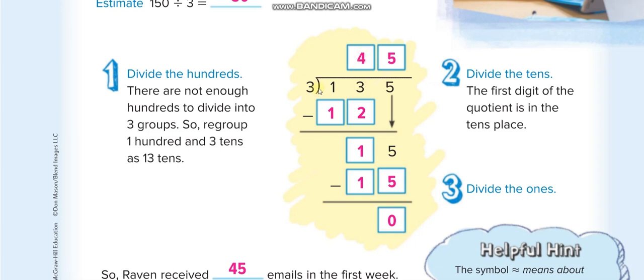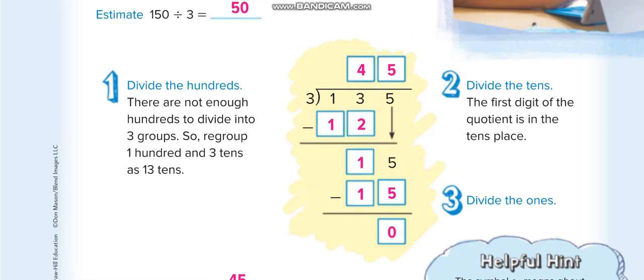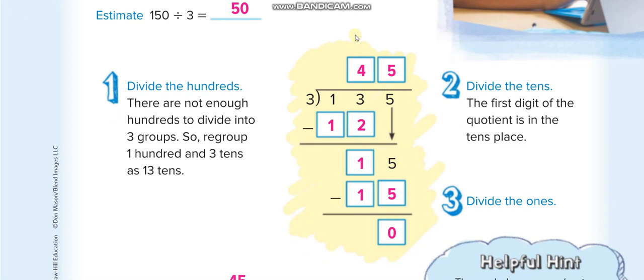Take two digits together: 13. 3 times what gives you 13 or less? 3 times 4 is 12. 3 times 5 is 15—that's more than 13, we can't take that. So 3 times 4 is 12. 13 minus 12 is 1. Now bring the next number down: 5. 3 times 5 is 15. 15 minus 15 is 0. So the quotient is 45. The estimate of 135—they take it as 150 divided by 3, which is 50.